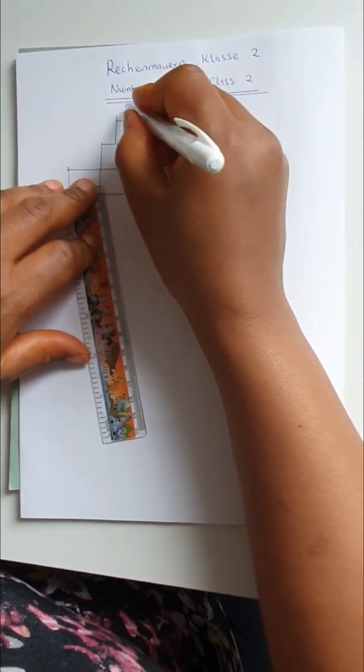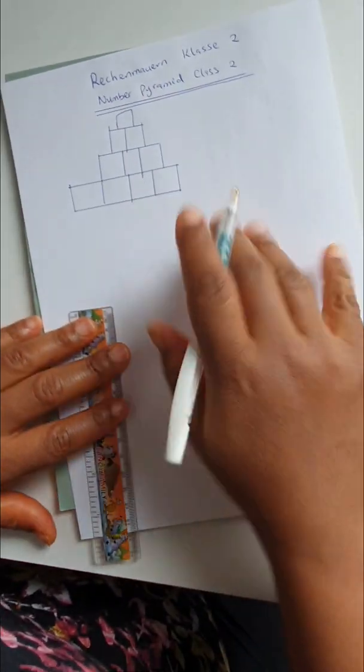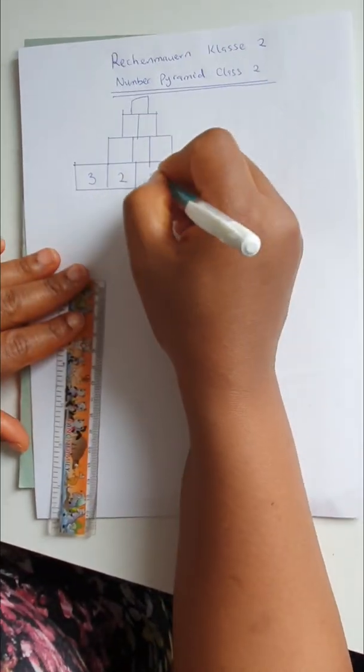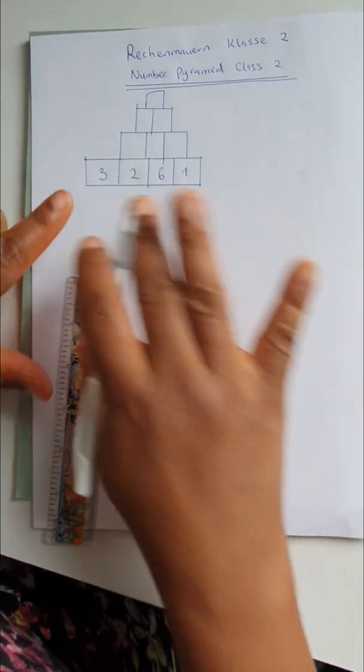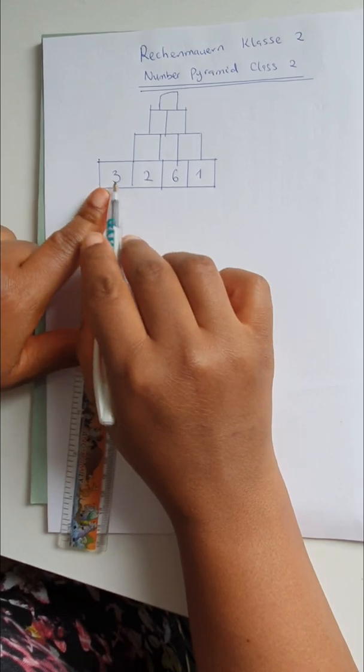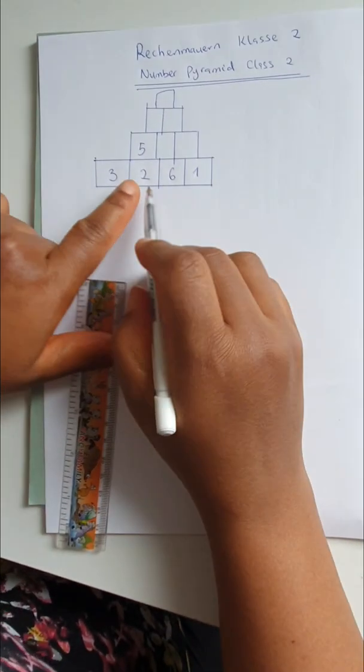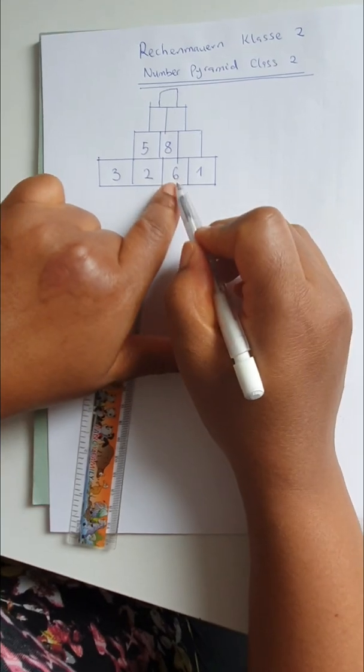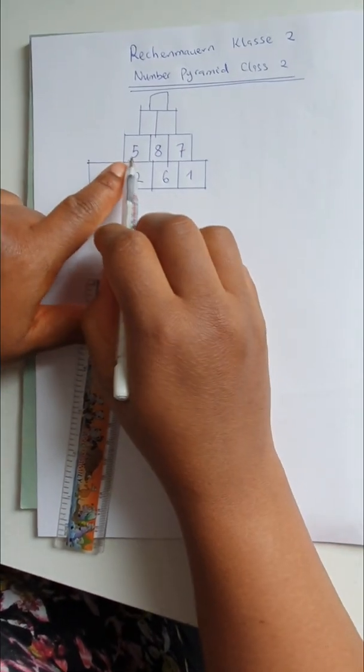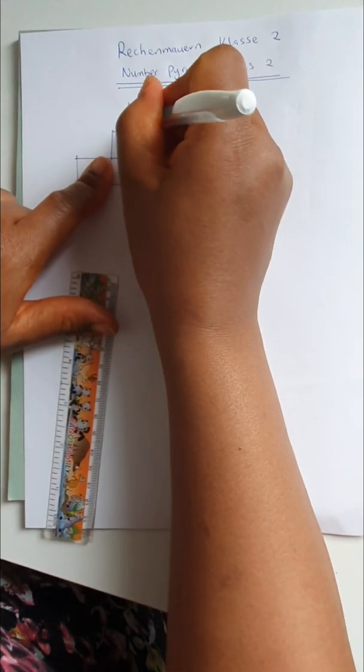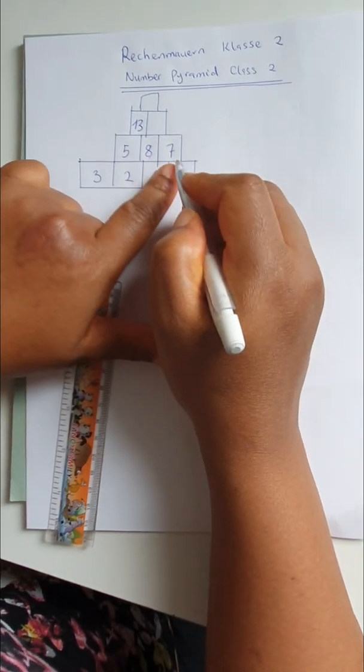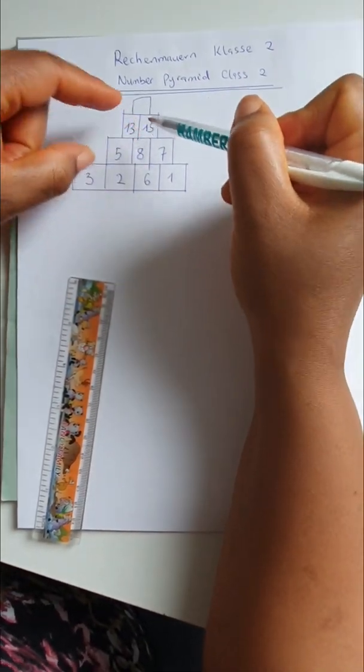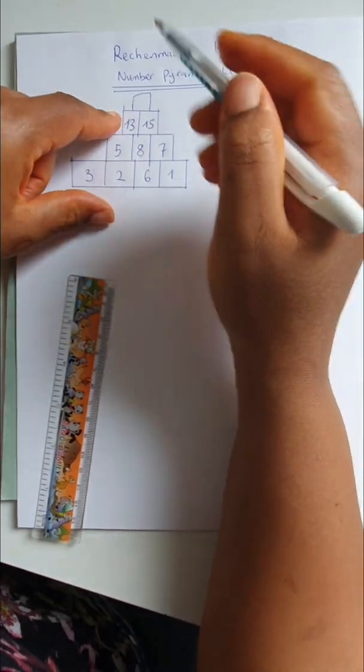And on top here we only have one. Let's say I have some numbers down here. Let me start from the very little numbers. I have 3, 2, 6, and 1. We will start here then we'll add these two together. 3 plus 2 is 5. Then 2 plus 6 is 8. 6 plus 1 is 7. And we'll go it all over again. 5 plus 8 is 13. 8 plus 7 is 15.